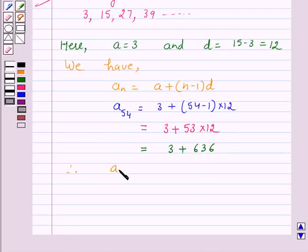Therefore, A54, that is the 54th term of the given AP, is 639.